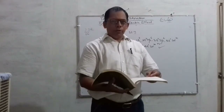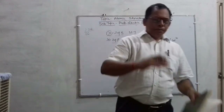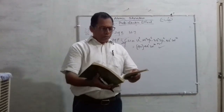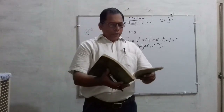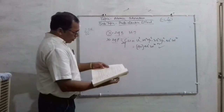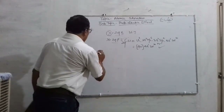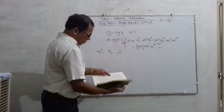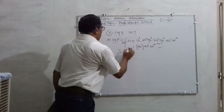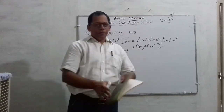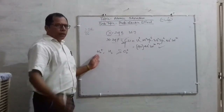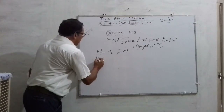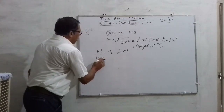Question number 2.27: Give the number of electrons in the species H₂⁺, H₂, and O₂⁺. H₂⁺ is formed by the combination of one hydrogen atom and one proton. Hydrogen has one electron and one proton.